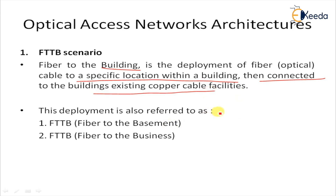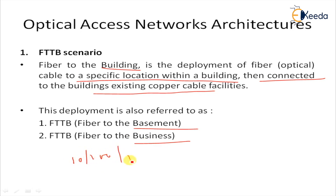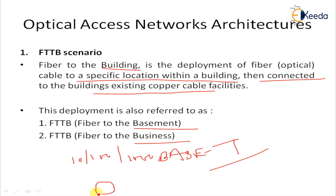FTTB is defined for the basement case or for business deployment. In the business deployment case, it provides a comparatively larger number of ports, including 10, 100, or 1000 Base-T network — where T stands for twisted pair — and also DS1, T1, or E1 ports.